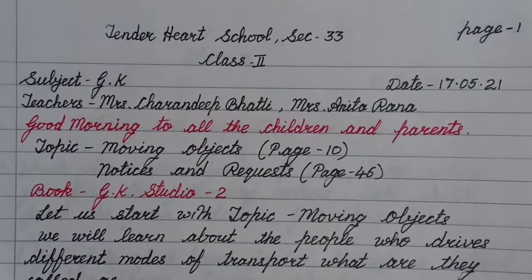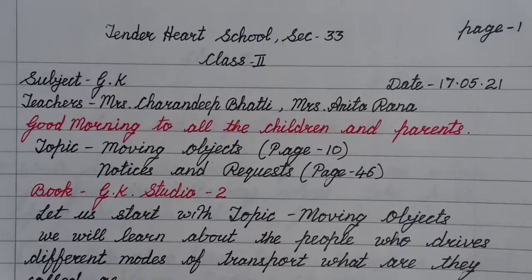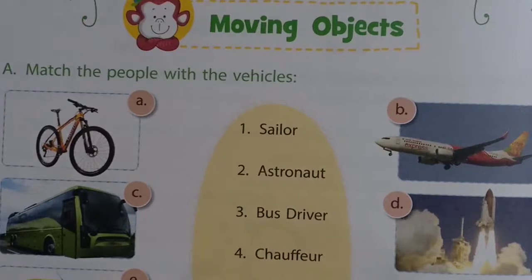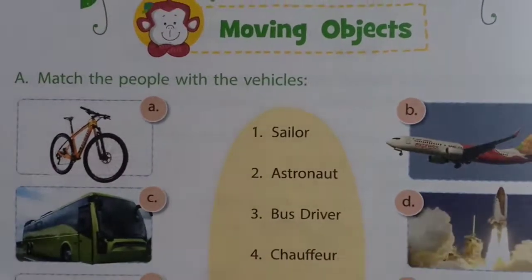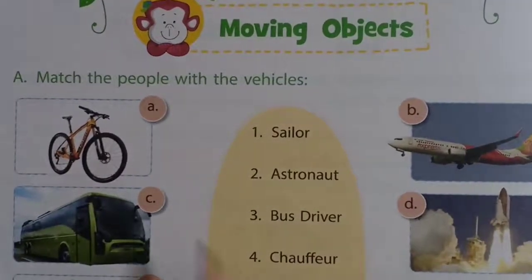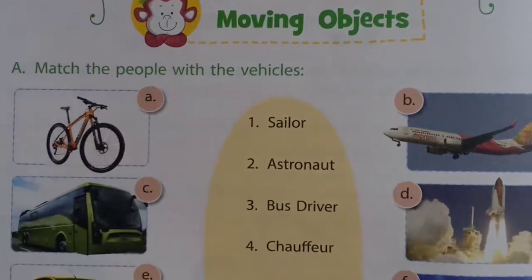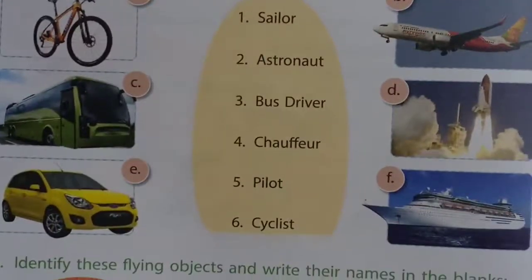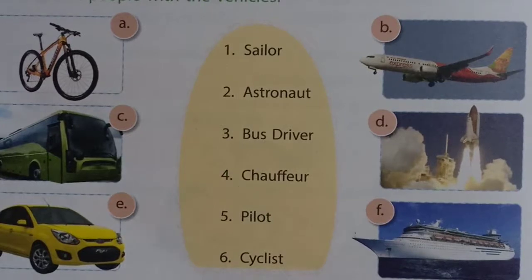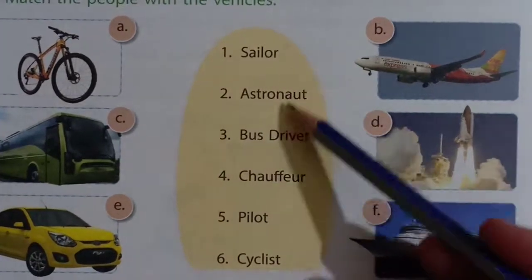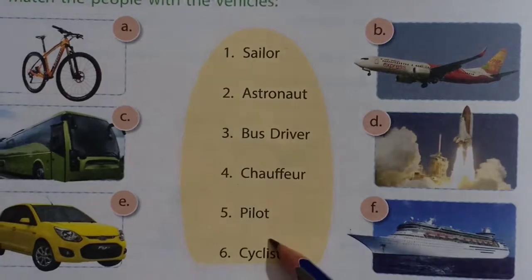So children, open page number 10 of your GK book. Let us start. This is page number 10. We are going to match the people with the vehicles. Here are 6 vehicles and we are going to match with these.